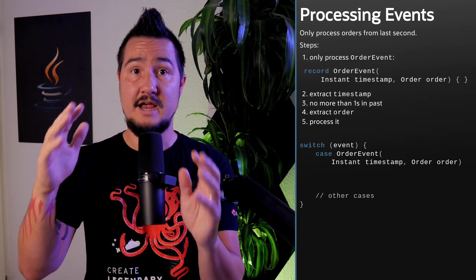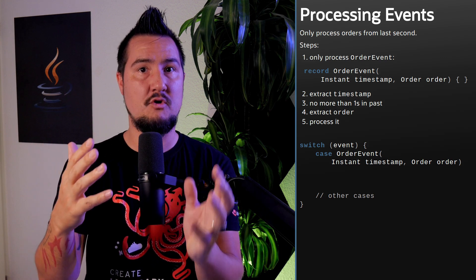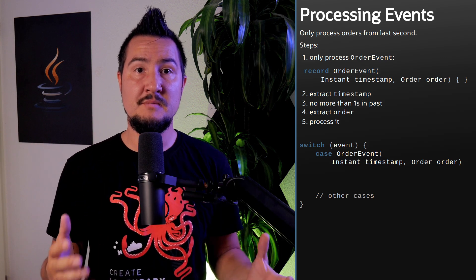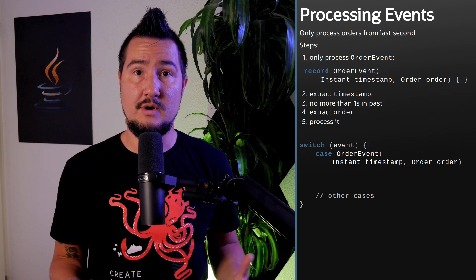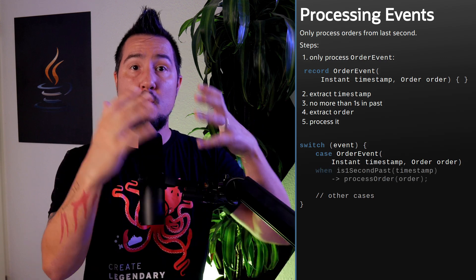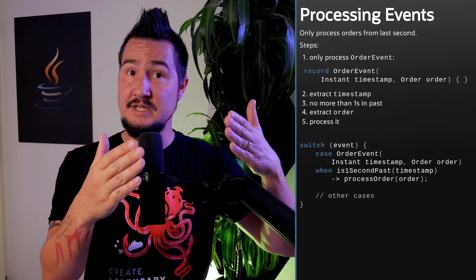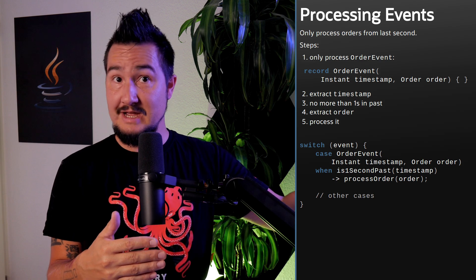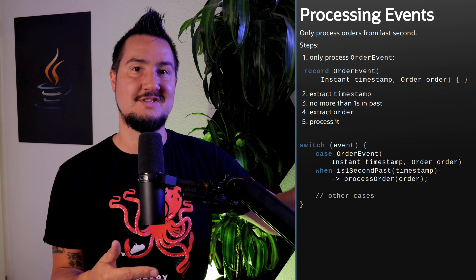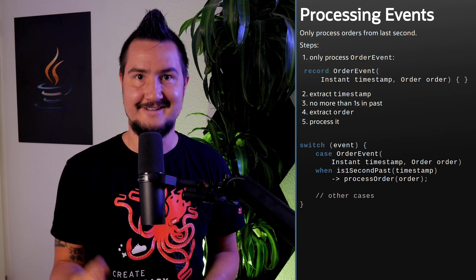JEP 405 proposes that for a record like OrderEvent, with a timestamp and an order, you simply put what looks like the canonical constructor where the type name goes in a type pattern. So: 'case OrderEvent(Instant timestamp, Order order)'. To implement the rest of our requirement, we'd follow up with 'when isOneSecondPast(timestamp)', then the arrow, and on the right side just the instruction to process the actual order. Easy, right?